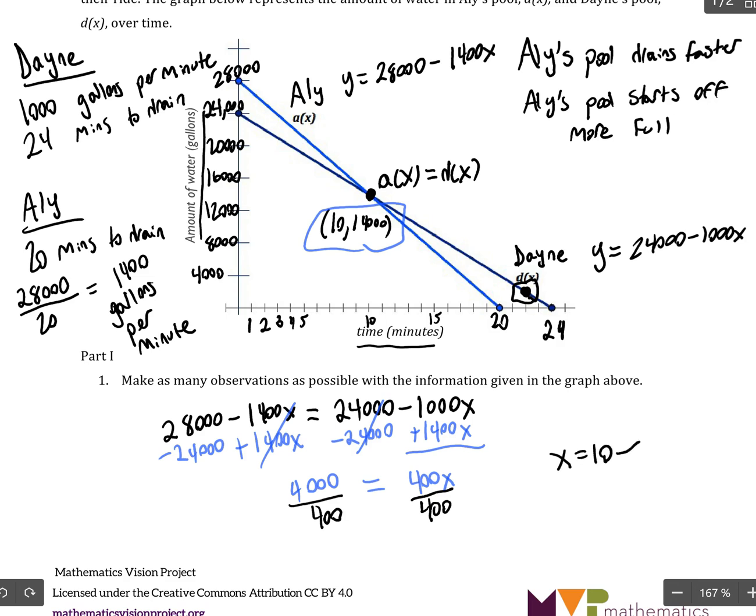And so, if we substitute X equals 10 into Dane's equation, we'll get that Y equals 24,000 minus 1,000 times 10. And that turns out to be 14,000.